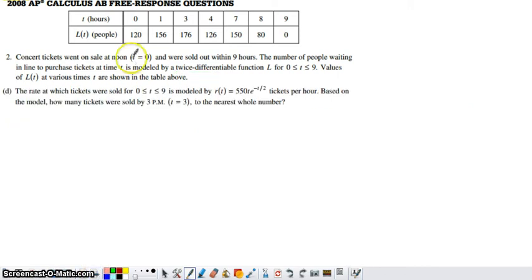In the last part, part D, they say the rate that tickets are sold from 0 to 9 is modeled by this function, measured in tickets per hour. Based on the model, how many tickets were sold by 3 p.m., which is the t value of 3? Round to the nearest whole number. So we have this function R(t), and R(t) is measured in tickets per hour. What we want is how many tickets were sold on the interval from 0 to 3.